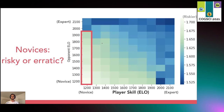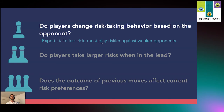Novices, however, seem to play extremely risky in almost all cases. This may indicate that their risk is actually just more erratic ignorance than a calculated strategy, but we would need more evidence to confirm that. In summary, we do see evidence that riskiness varies based on skill, and that most players play riskier against weaker opponents and less risky against strong opponents.